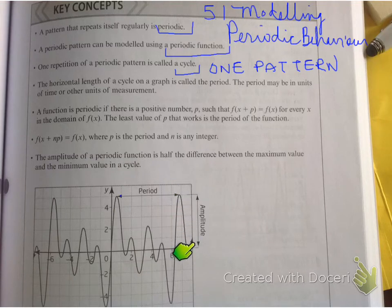Now, the amplitude is basically half the difference between the maximum value and the minimum value in a cycle. So it goes from the top to the middle, or from the middle to the bottom. That's known as the amplitude.